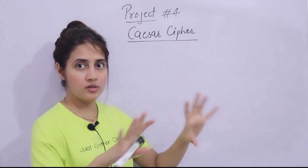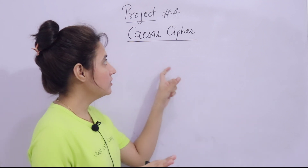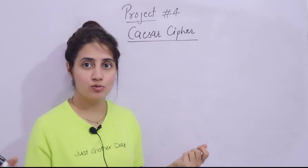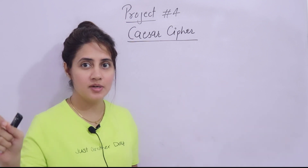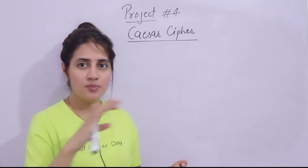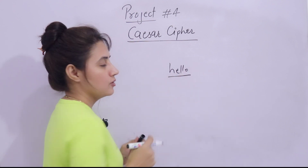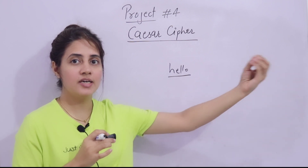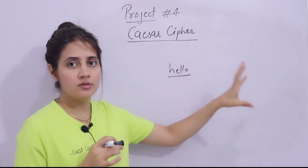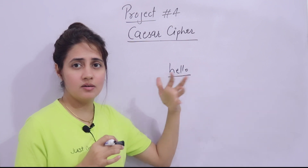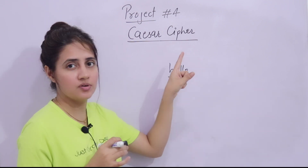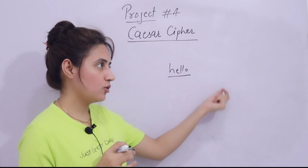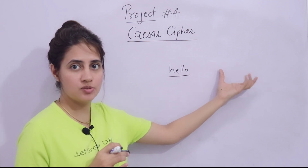Let me just brief you first if you don't know what Caesar cipher is all about. Basically it's a technique to send secret messages — an encryption technique. Nowadays, like in WhatsApp, you get those messages saying the messages are encrypted. Whatever you send as a simple text, like 'hello', that is a plain message. But it would first be encrypted into some other form, then sent to the receiver. So that hackers cannot get the message as plain text.